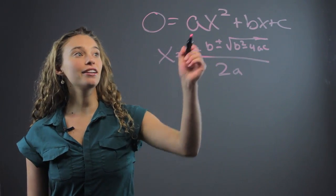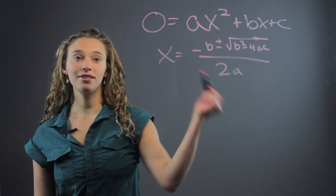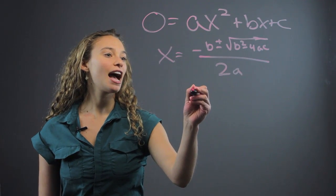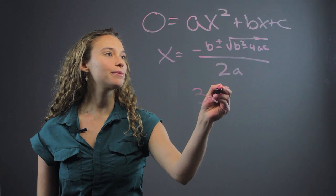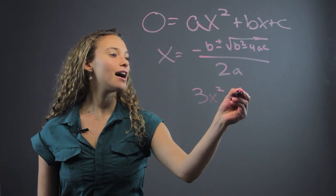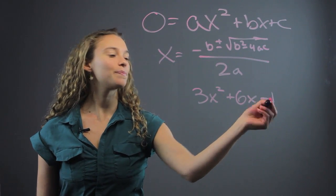So, we literally plug in the coefficients into this formula. So, let's say we have 3x squared plus 6x minus 1.